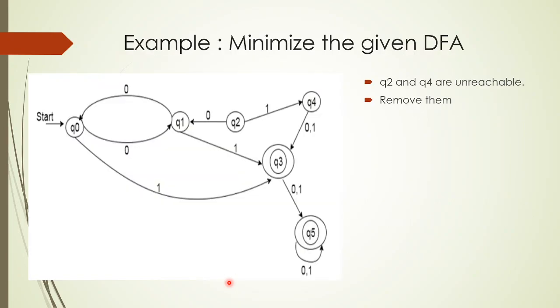Now let's take an example. The question is: minimize the given DFA. The DFA has states Q0, Q1, Q2, Q3, and Q4.